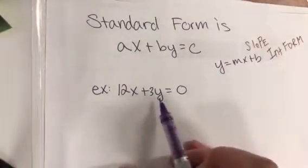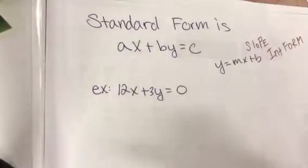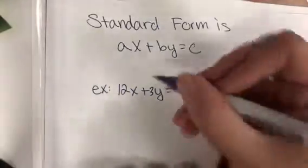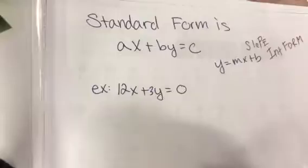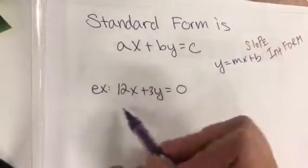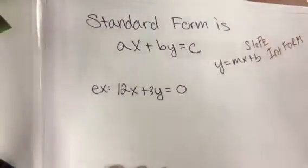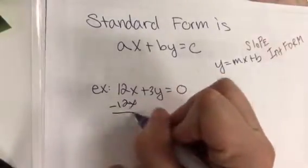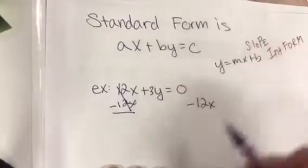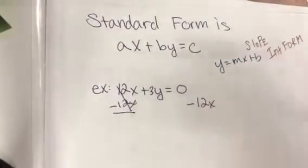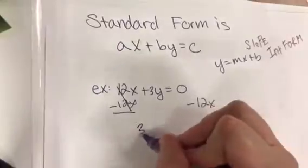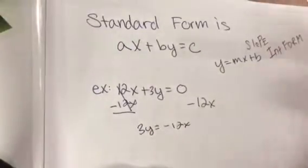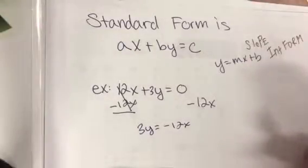We're going to manipulate 12x plus 3y equals zero. When we say manipulate we mean we want to move everything around as long as it's mathematically correct. We want to isolate our y, so y is all by itself. We're going from standard form to slope intercept form. The first thing we're going to do is this 12x needs to go on to the other side. We're going to subtract 12x from this side and then subtract 12x from here. We're left with 3y equals negative 12x because zero is zero, the loneliest number.